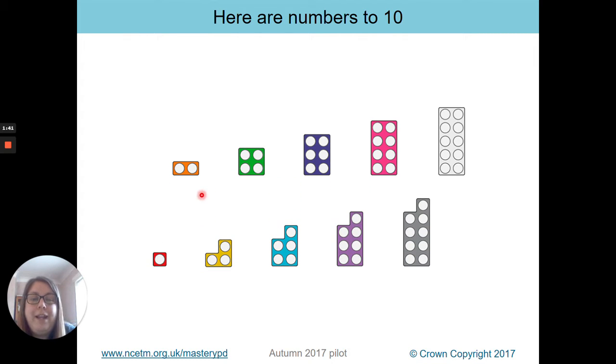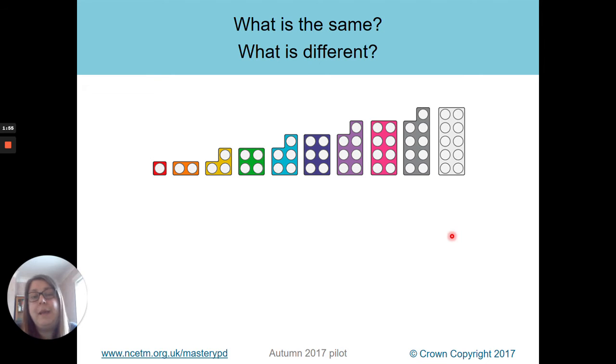So let's have a little think a little bit more then. So here we have our even numbers and our odd numbers. So our even numbers are zero, two, four, six, eight, ten. And our odds are one, three, five, seven, and nine. So what is the same and what is different? I've given you a little bit of a clue, but see if you can tell your grown up now. What is the same and what is different between these Numicon pieces and our odd and even numbers?